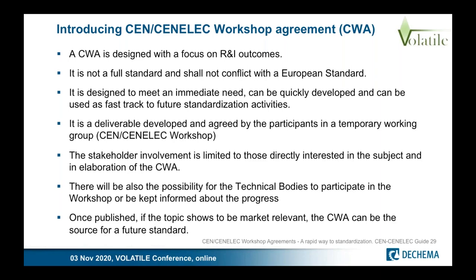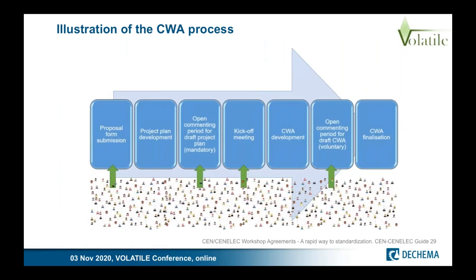Once published, if a topic shows to be market-relevant, the CWA can be sourced for a future standard. To introduce you to the process of developing a CWA, there is in guide 29 a nice picture that illustrates it very well. I decided to take that one and skip the one we normally use in the workshop to introduce the process, because it is much more straightforward and illustrates all these steps a little bit clearer. So I adopted it from the guide.